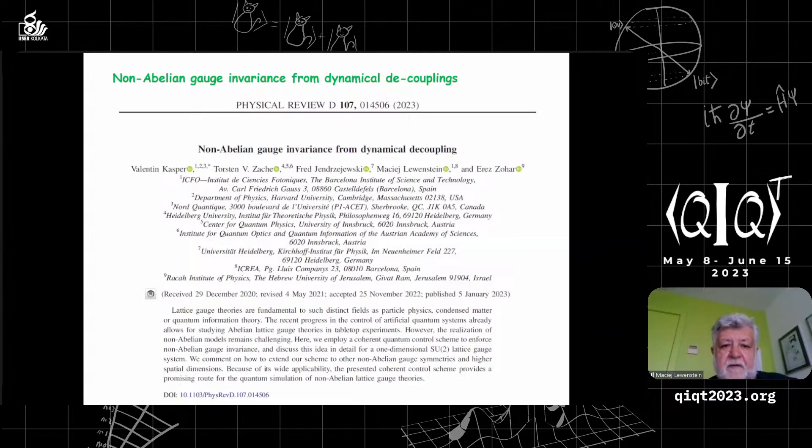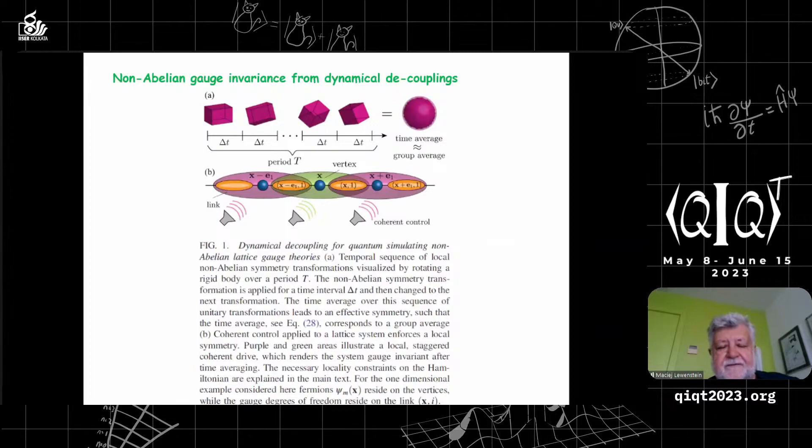We studied a similar system for quantum simulation of lattice gauge theories, particularly non-abelian lattice gauge theories. We proposed a novel method of achieving non-abelian gauge invariance by dynamical decoupling. The idea is that matter lives on the sites of the lattice and gauge fields live on the links. We apply random unitaries to the links to assure local gauge invariance. If you have a figure without rotational symmetry and rotate it rapidly, you see a sphere with rotational symmetry - similar idea for non-abelian gauge theories.